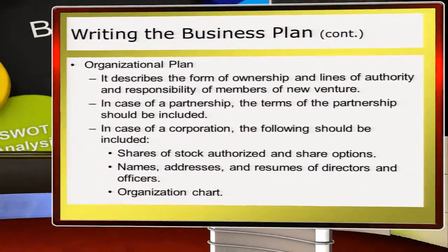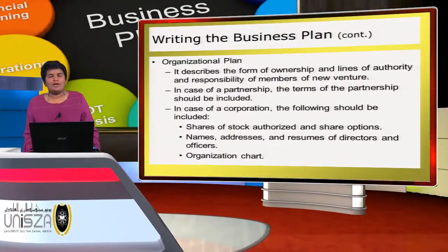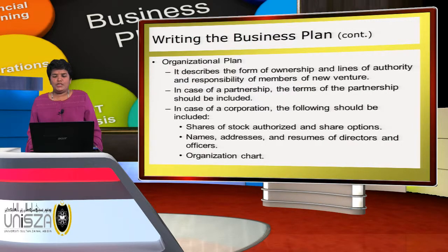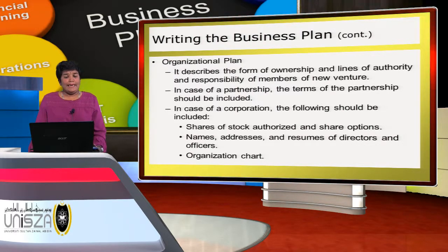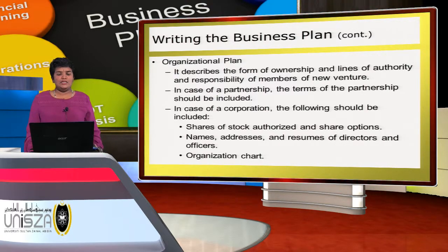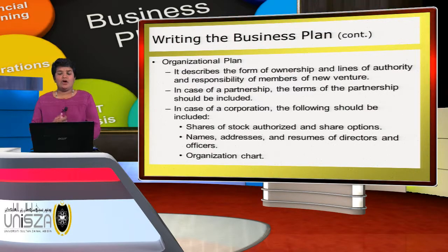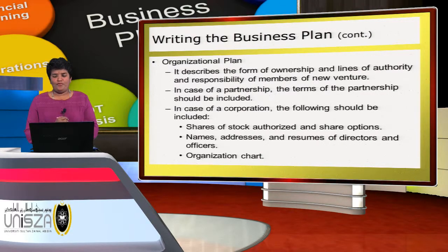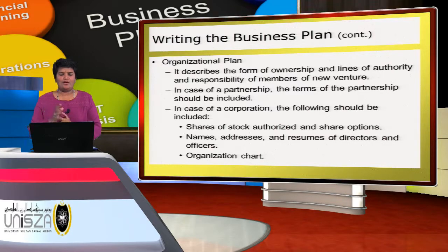The business plan should also include an organizational plan. In this section, we describe the form of ownership and lines of authority and responsibility of members of the new venture. In case of a partnership, the terms should be clearly spelled out. In case of a corporation, include shares of stock authorized and share options, names, addresses, and resumes of directors and officers, and the organizational chart.